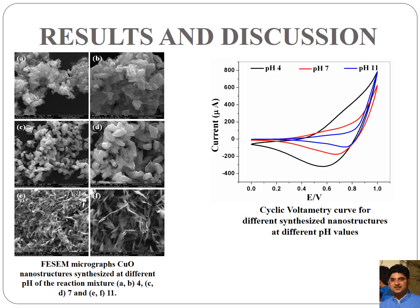Next, the scanning electron microscopy of copper oxide nanostructures was done. From the figure we can see that at pH 4 we are getting 3D spindles. When the pH was increased to 7 the morphology did not change and we were still getting 3D spindles, however the size at higher pH was larger. When the pH was increased to 11, the spindle-shaped morphology changed and we got leaf-like morphology. So changing the pH changed the morphology of the copper oxide nanostructures.